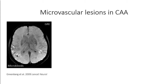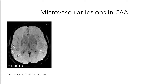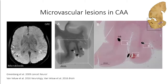Microbleeds have been extensively studied on MRI in these patient populations because we are actually very good at detecting them. Gradient echo or susceptibility-weighted imaging is very sensitive for detecting these small bleeds in the cortex. In CAA patients, microbleeds often occur in cortical areas, and they correlate with an increased risk of hemorrhage. However, on pathology, we often miss these lesions because they're so small, and a pathologist doesn't come across them very often.